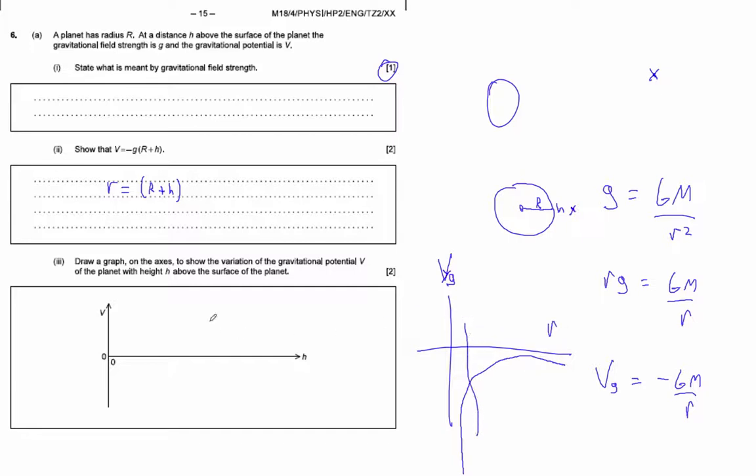But we're talking about a distance R and H above the planet. So here's the radius of the planet. And this should be an asymptote approaching zero. So that's what you're looking for.